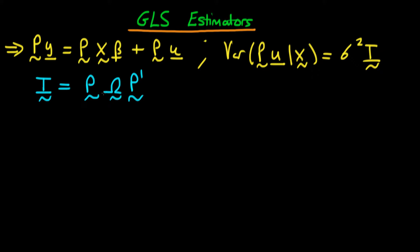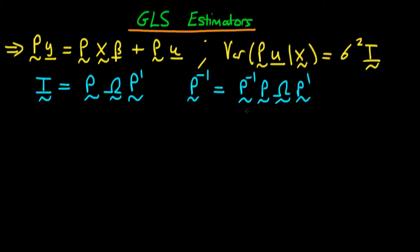If we take this expression and multiply both sides by the inverse of P, we have that P inverse times the identity matrix — which is just P inverse — equals P inverse times P times omega times P transpose. Notice that P inverse times P yields the identity matrix, which when multiplied by omega gives omega times P transpose.